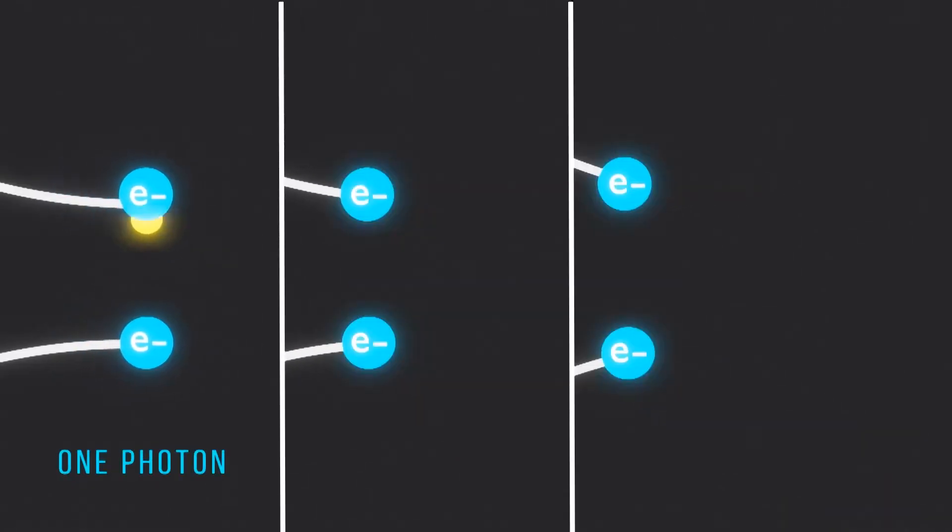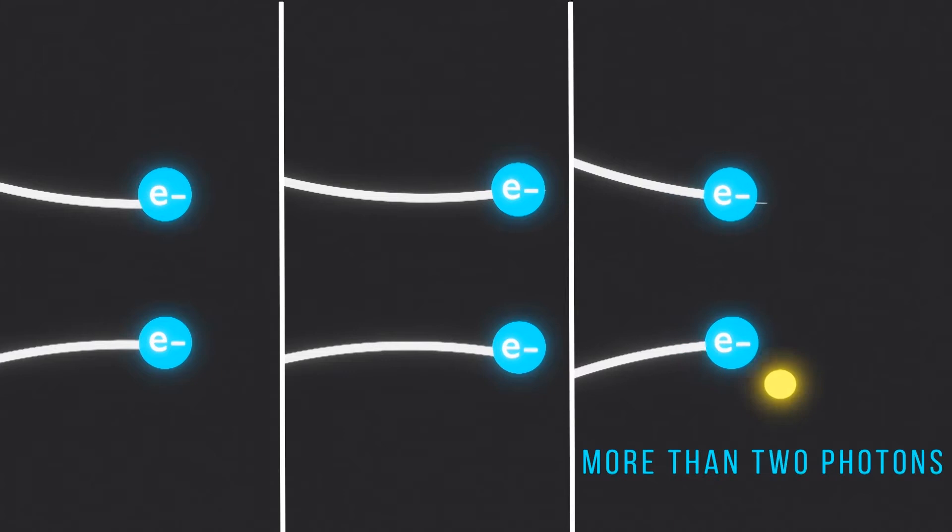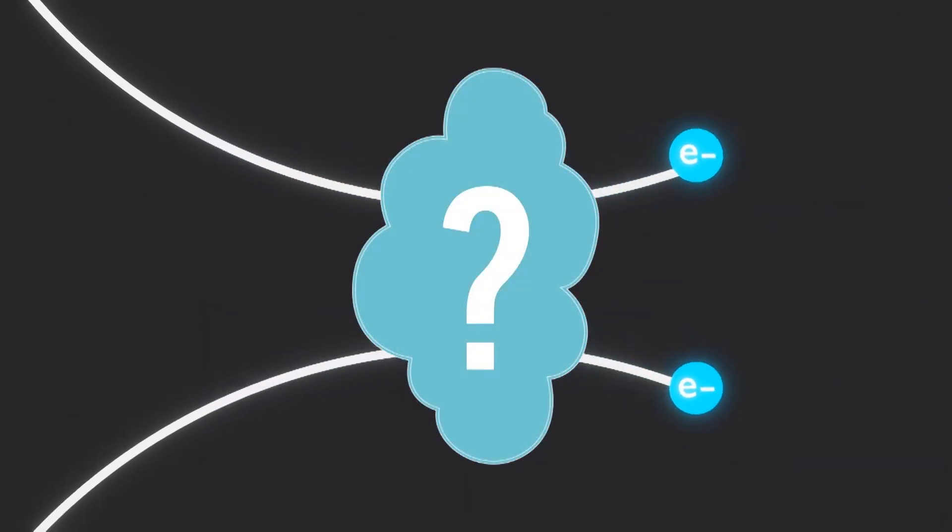There could be one photon exchanged, or two, or more. We only know that it caused the electrons to repel.